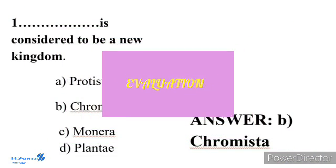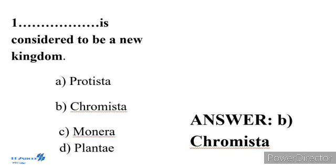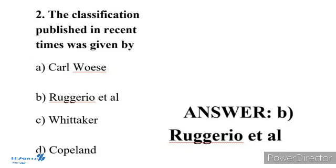Evaluation Question 1: Which is considered to be a new kingdom? Option A: Protista, Option B: Chromista, Option C: Monera, Option D: Plantae. The correct answer is Option B, Chromista. Question 2: The classification published in recent times was given by Option A: Carl Woese, Option B: Ruggiero et al., Option C: Whittaker, Option D: Copeland. The correct answer is Option B, Ruggiero et al.